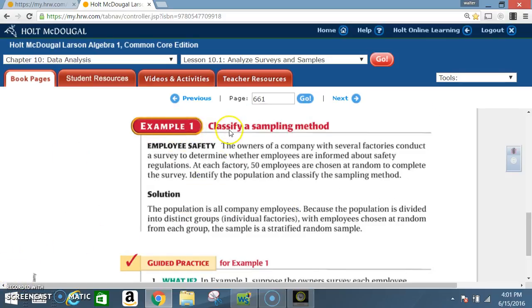Example 1: Classify a sampling method. Employee safety. The owners of a company with several factories conduct a survey to determine whether employees are informed about safety regulations. At each factory, 50 employees are chosen at random to complete the survey. Identify the population and classify the sampling method.